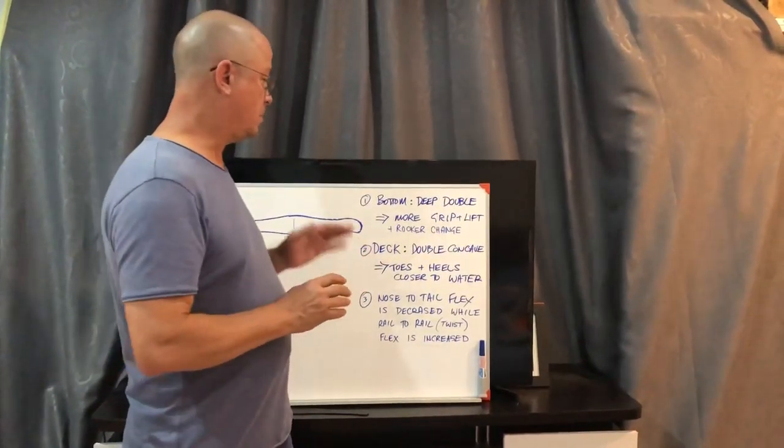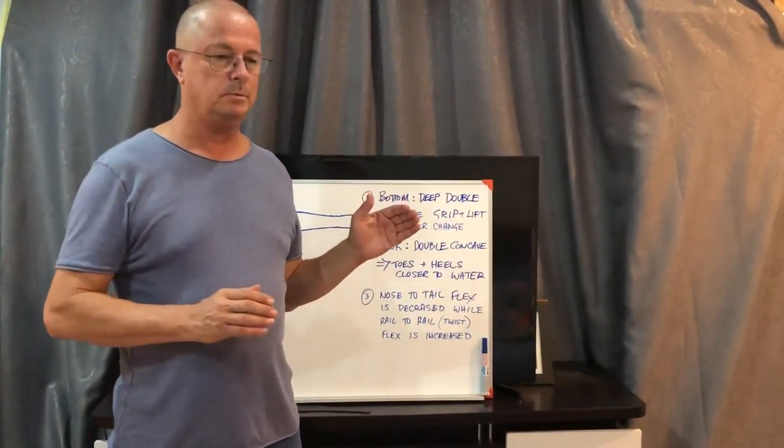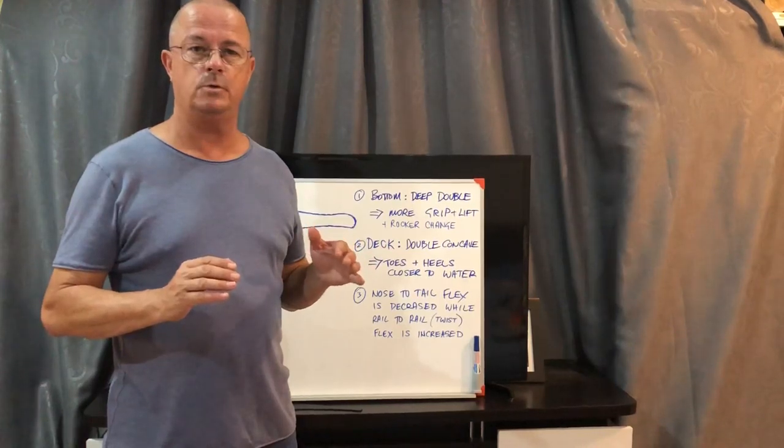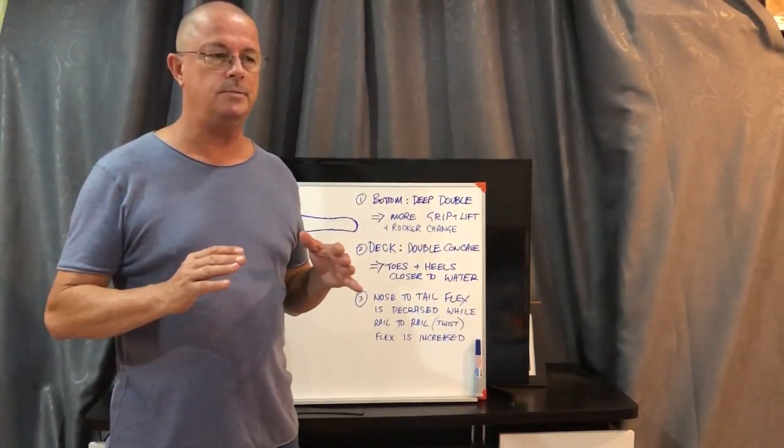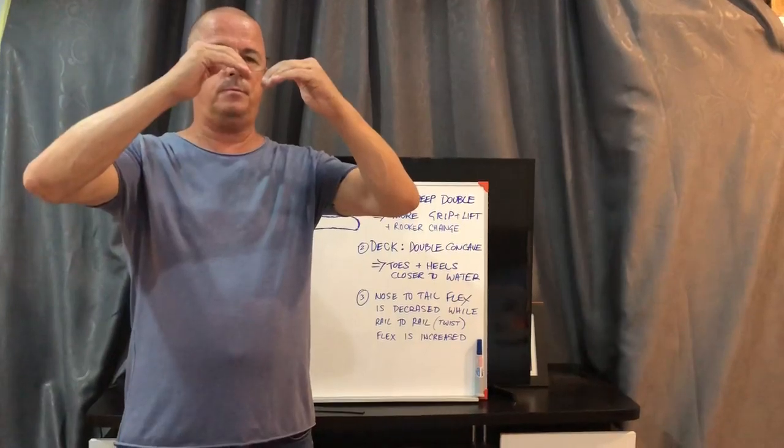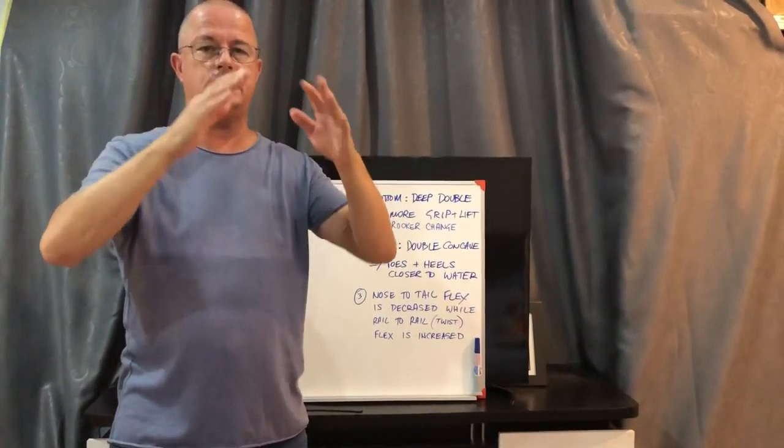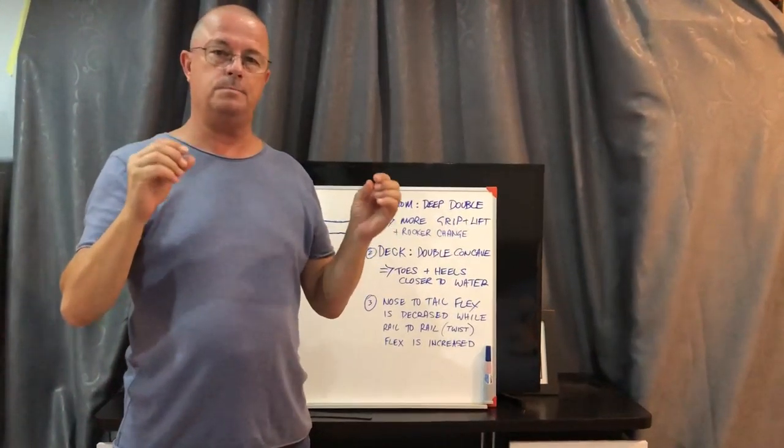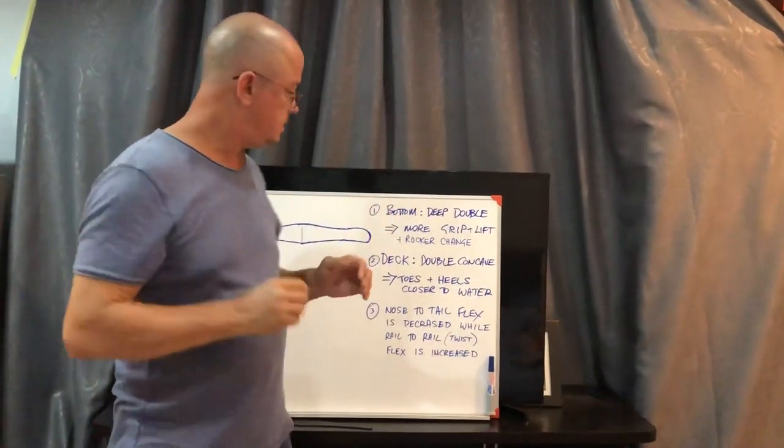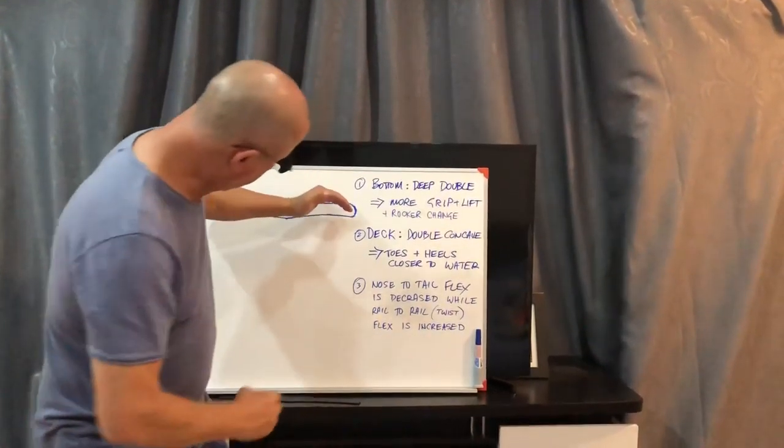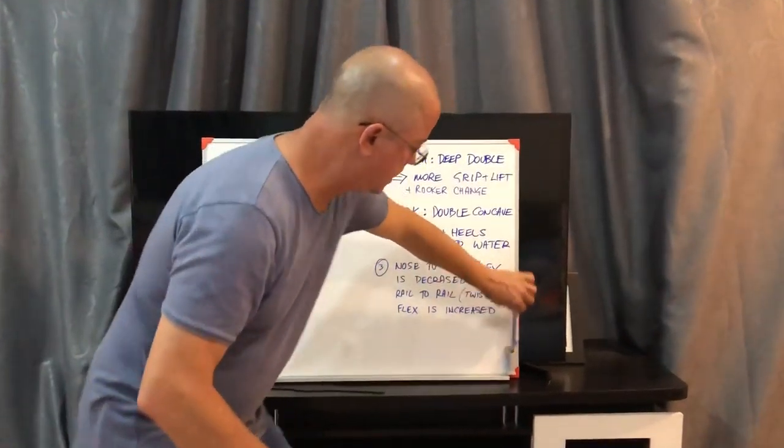So to begin with I'll just talk about why the deep double and the first thing is the grip. There's a significant if not huge increase in grip when you have narrower tighter radius concaves as against the single concave which is moderate in depth. And the reason being is that you get this angle and I'll give you a quick sketch to look at it.